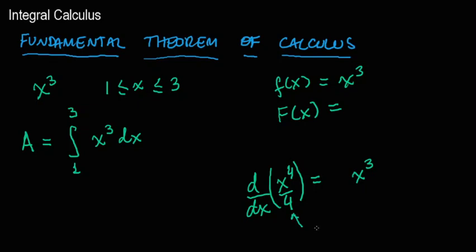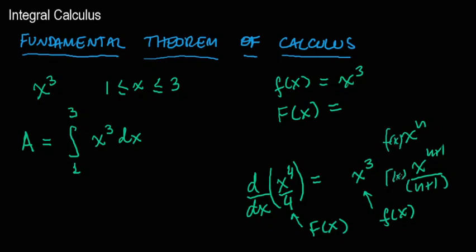If the derivative of x to the power 4 over 4 is x to the power 3, then that's the antiderivative. This is our capital F(x), this is our lowercase f(x). You can apply a more general rule. If you have x^n, the antiderivative is x^(n+1) over n+1.